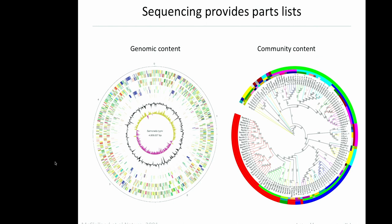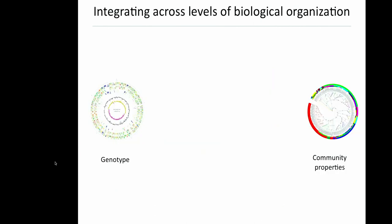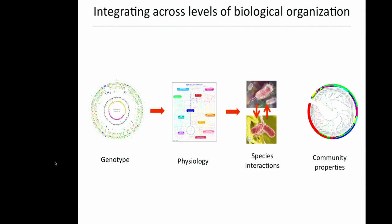My lab is attempting to connect dynamics across these levels of biological organization. Specifically, we would like to be able to start with a genome, use that to understand the physiology of a single organism, understand how this intracellular metabolic physiology generates species interactions, and then ultimately understand how these species interactions generate emergent community properties.